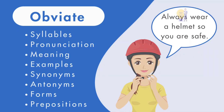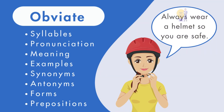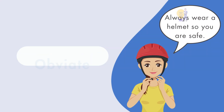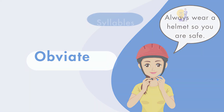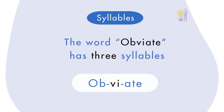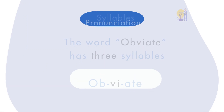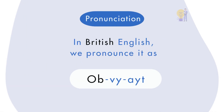Hello and welcome to English Bites. In this video we are discussing the word 'obviate'. Obviate has three syllables, and in British English we pronounce it as 'obviate'.